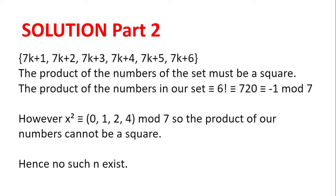The product of the numbers of the set must be a square. This is because if we can partition the set into two subsets with the numbers of equal product, say x, then the product of the numbers of the whole set is x², and x² is a square.